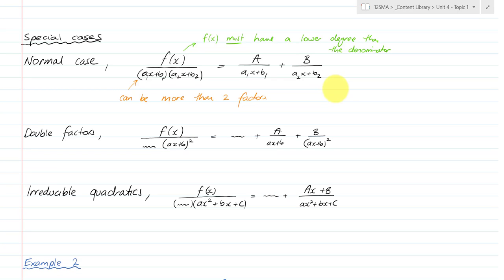That is equal to, or equivalent to, some constant over one of the linear factors plus a constant over the second linear factor. And it could be a cubic, which means you might have more than two factors.